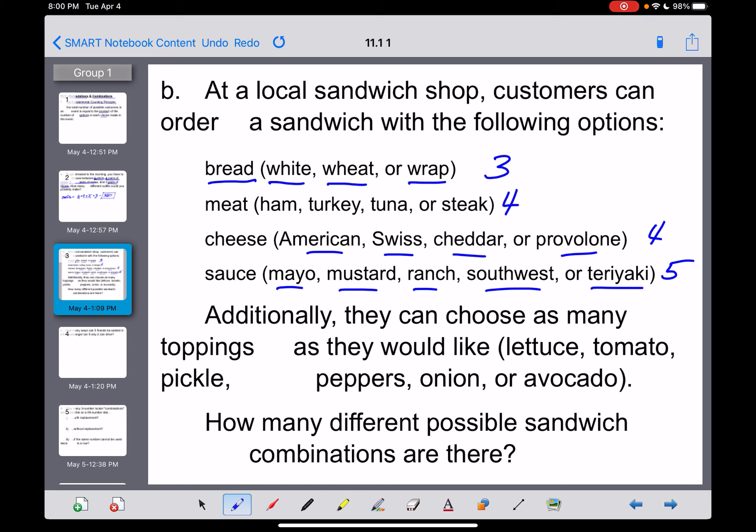Additionally, you can choose as many toppings as you would like here. So unlike the previous choices we had to make where it was one or the other, like when you went to choose a bread, you could have white bread or wheat bread, or you could get a wrap, but you could not do both of those. But when we start moving into toppings, it's not lettuce or tomato. You could have lettuce and no tomato, or you could have tomato and no lettuce, or you could have yes lettuce, yes tomato, or you could have no lettuce, no tomato.